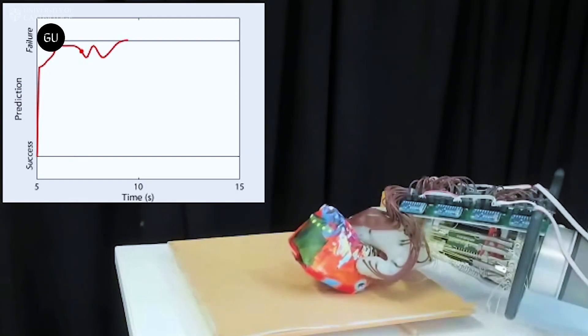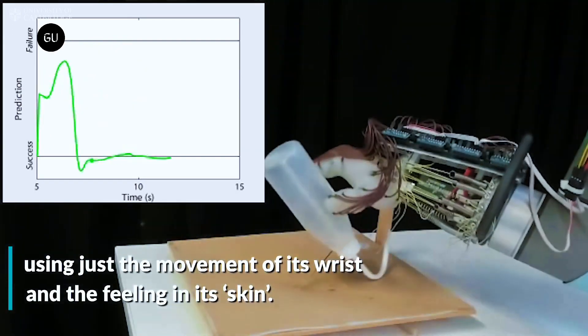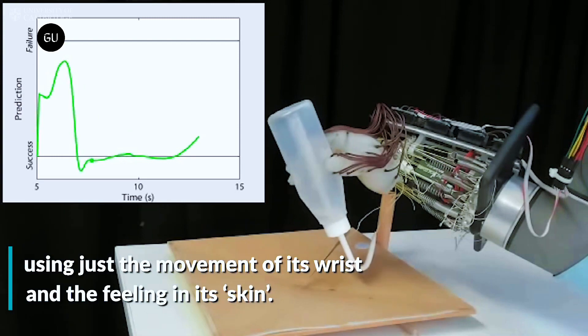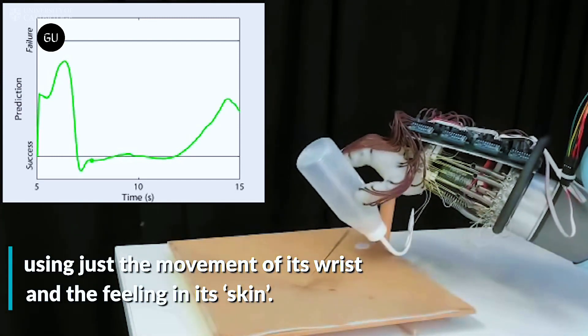Initially trained using 3D-printed plastic balls, the hand successfully held 11 out of 14 different objects, including a peach, a computer mouse, and a roll of bubble wrap.